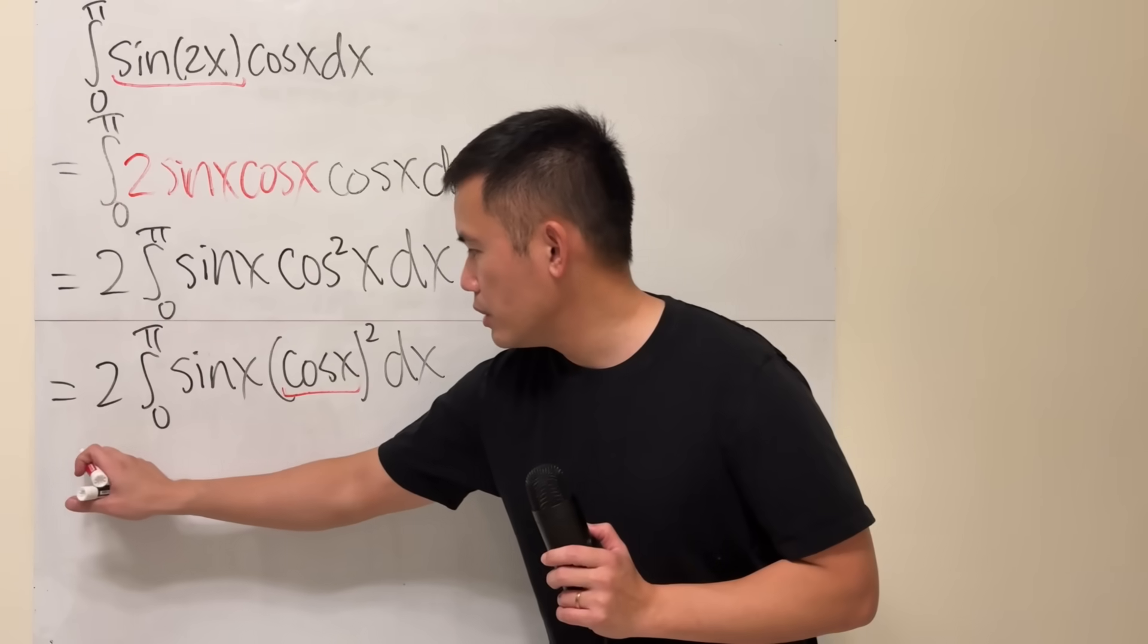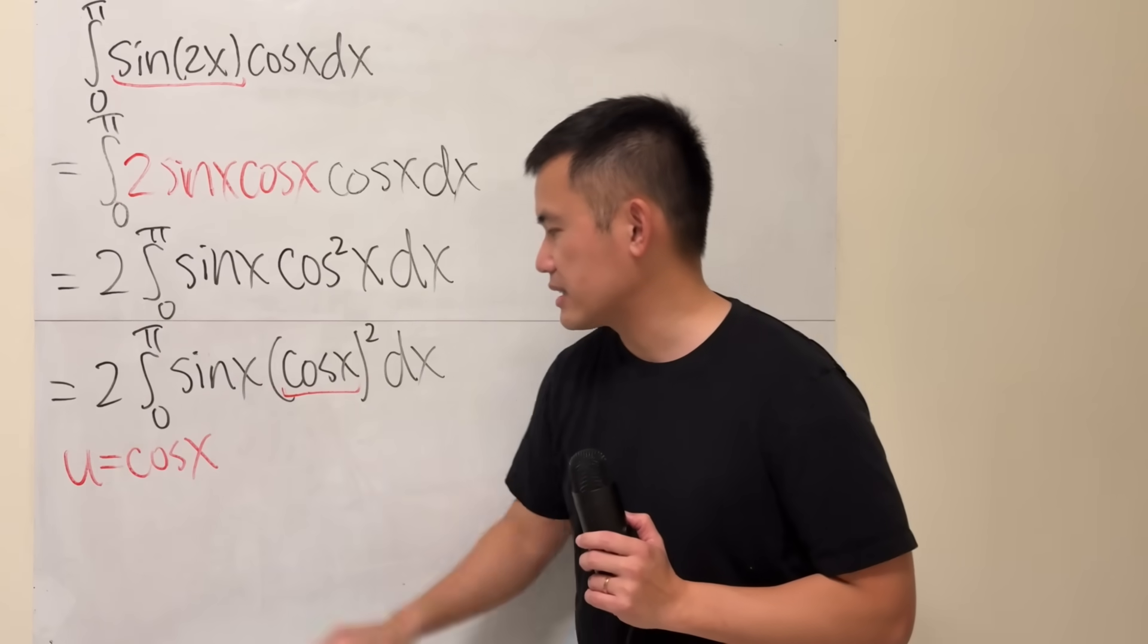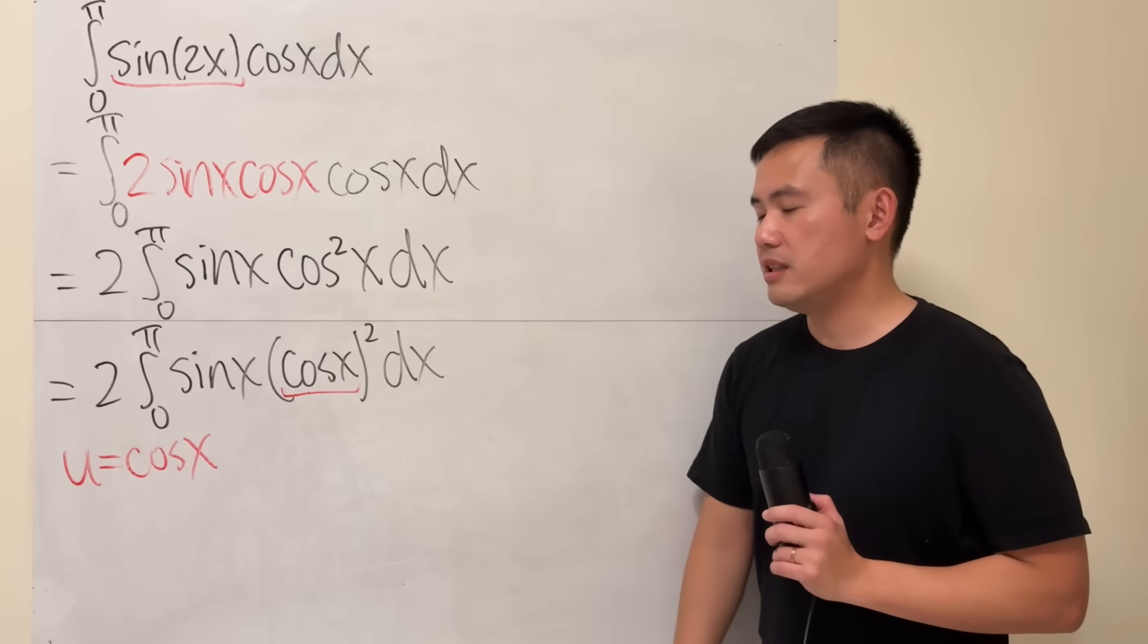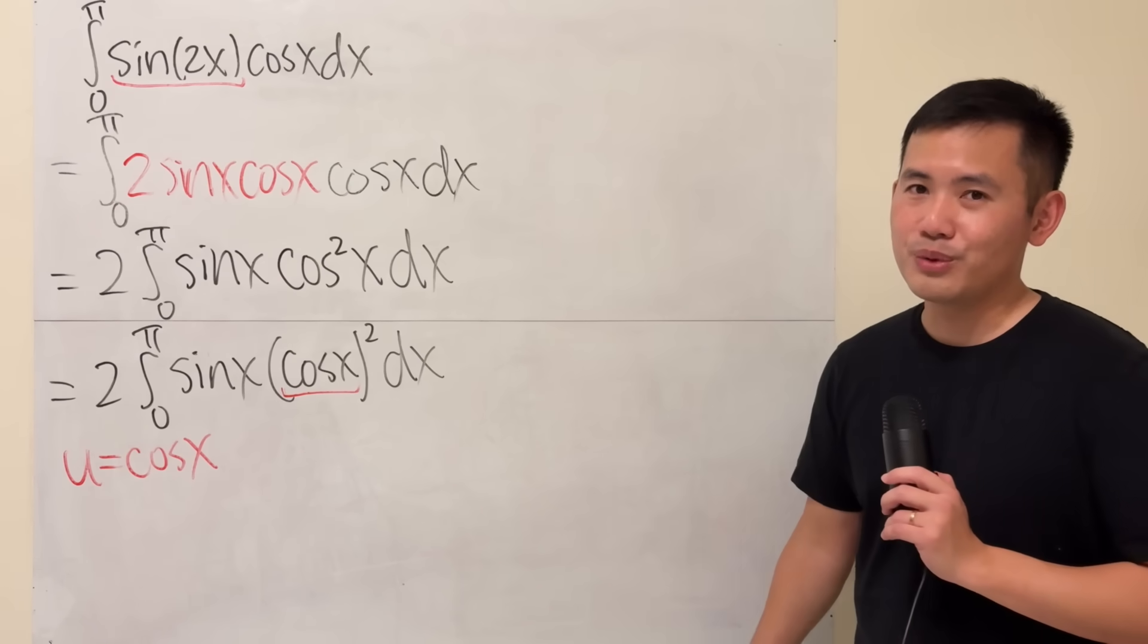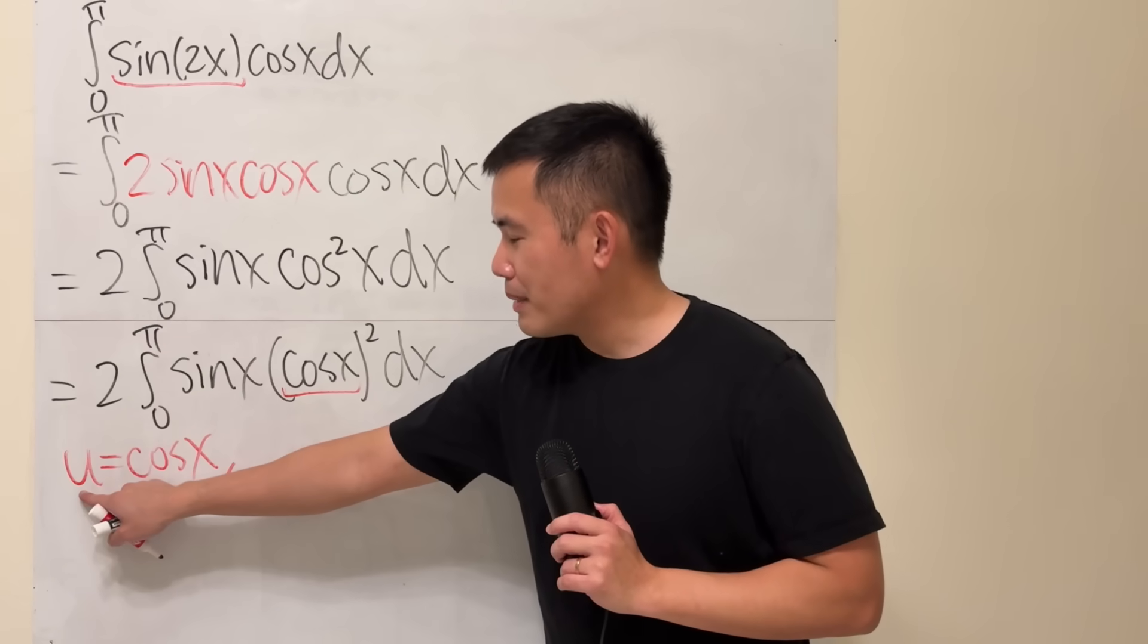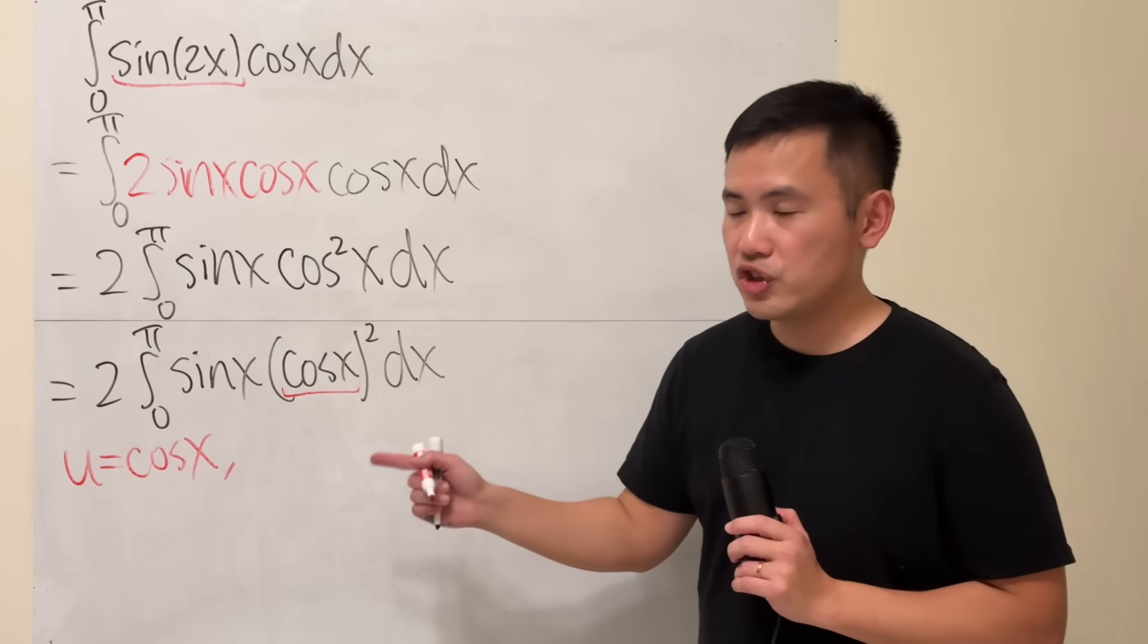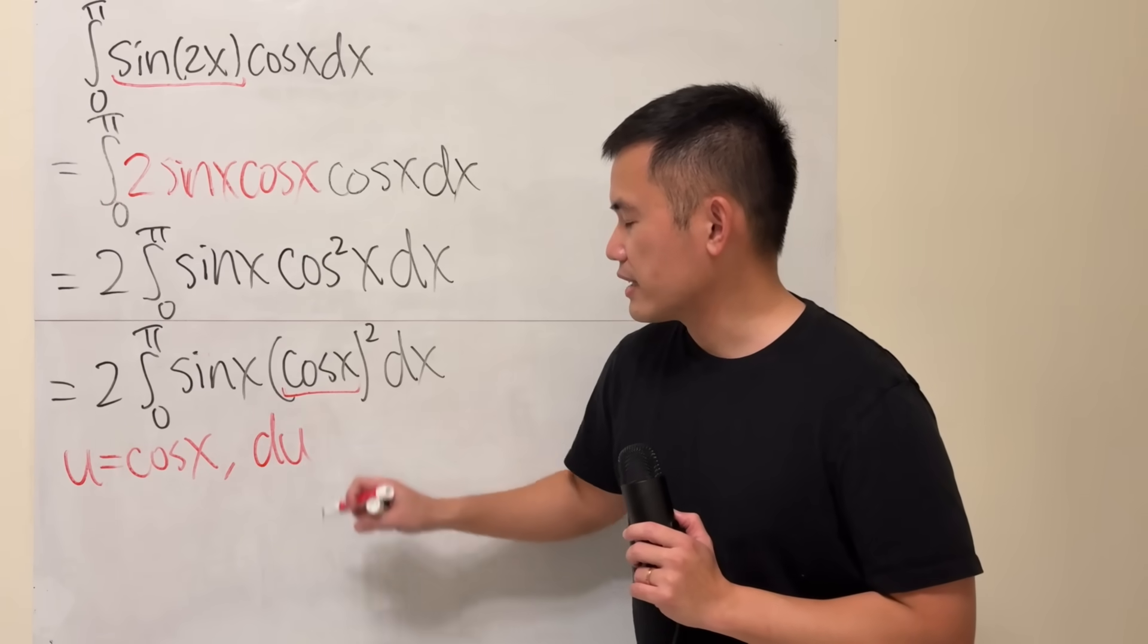So I am going to put u equal to cosine x, and then we'll just proceed and hope for the best because sometimes that's not going to work. But anyway, what I mean by proceeding is you look at this and differentiate both sides. The derivative of u is just du. You can just write it down like that.